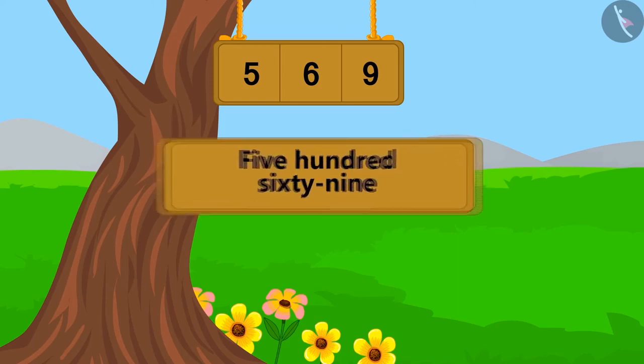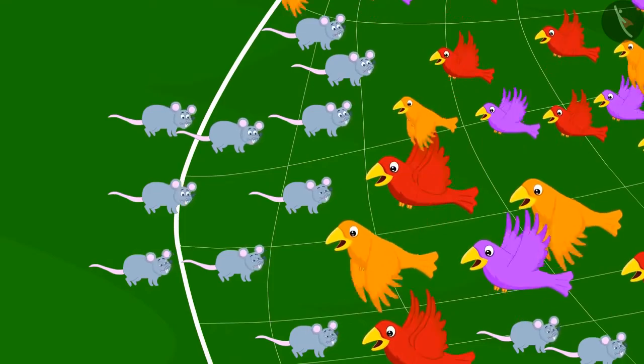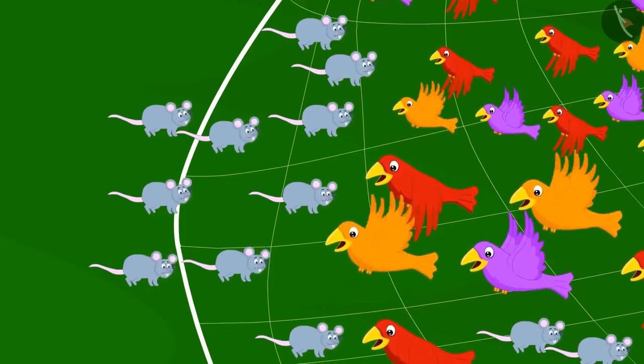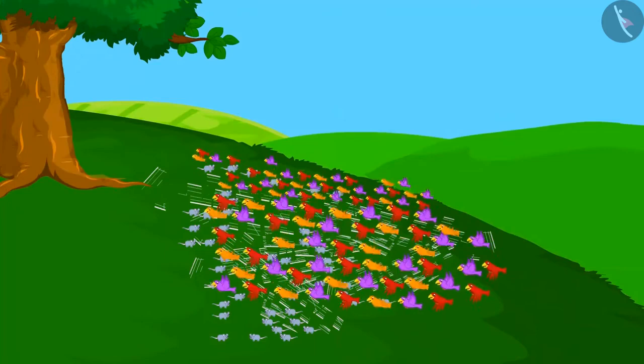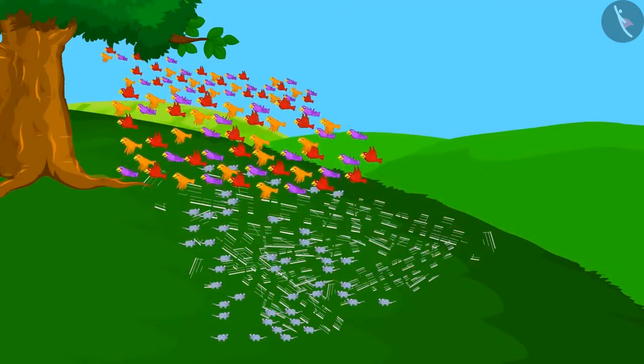569. This was so easy, isn't it? 569 rats got together and cut the net. The birds thanked them and happily flew to their home.